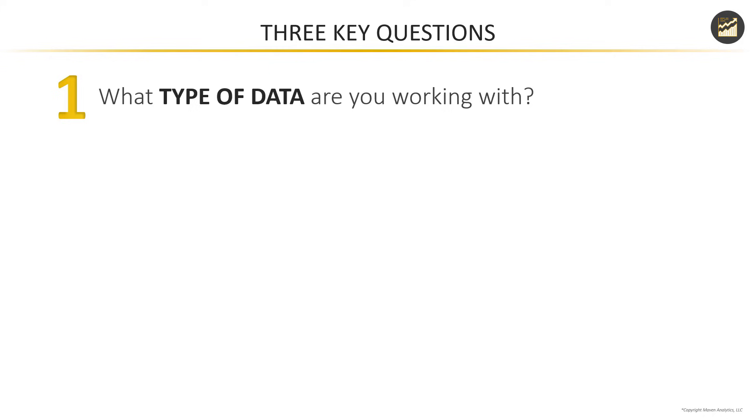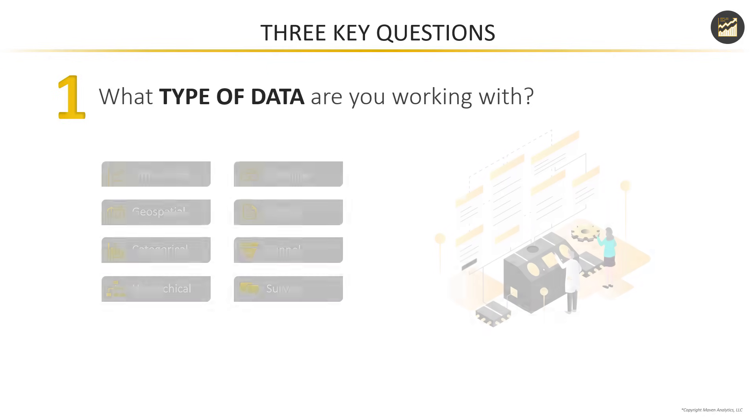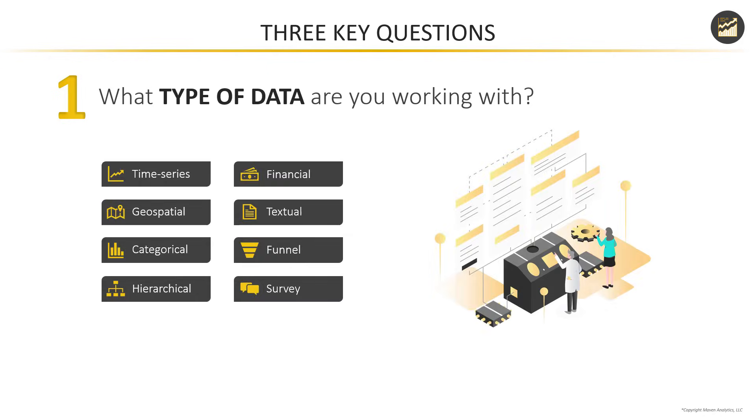Let's unpack each of these questions in more depth, starting with question one: what type of data are you working with? Data comes in all shapes and sizes. Some of the things you're looking for are: do I have time series data, a date field that lets me show trends or patterns over time? Do I have geospatial fields that let me draw comparisons between geographic regions or locations using maps? Are there interesting categorical fields that I can use for filtering or segmenting the data in my reports?